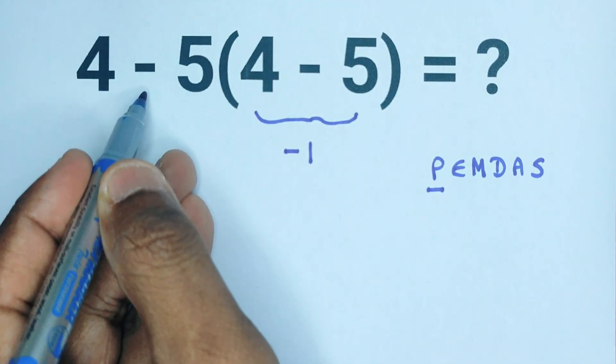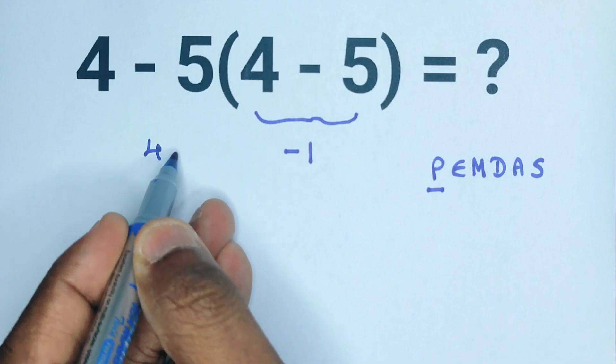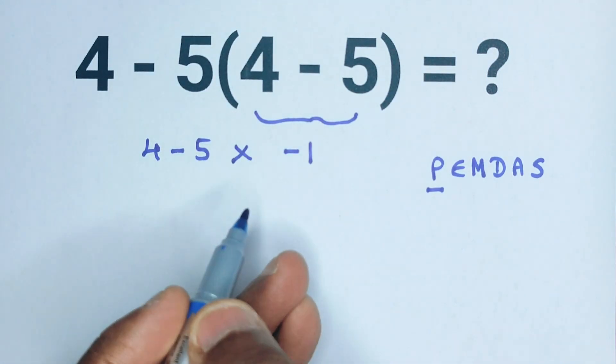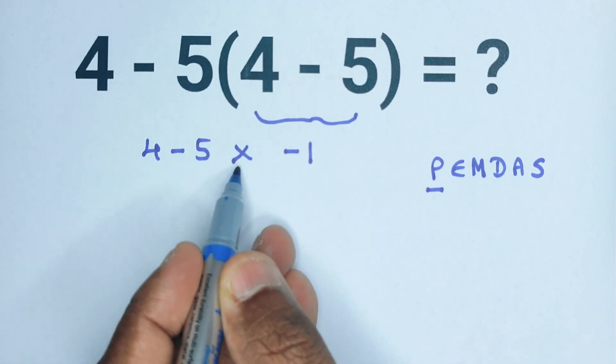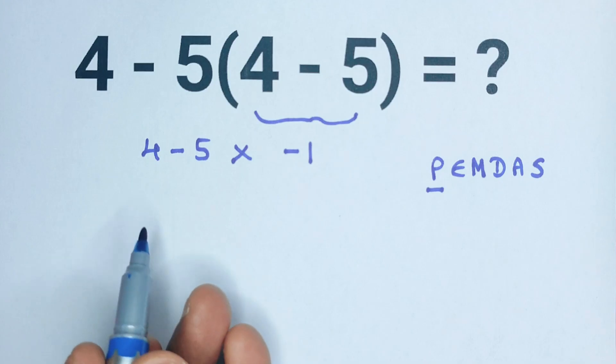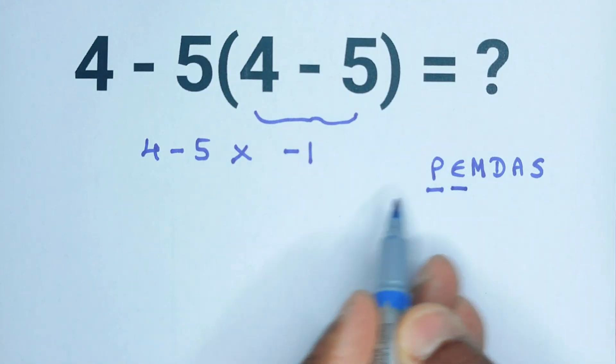Now the expression looks like this: 4 minus 5, and the parenthesis means multiplication, and negative 1. So 4 minus 5 times negative 1. Next we look for exponents, but there are none in this expression.